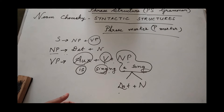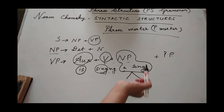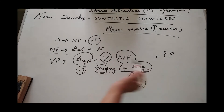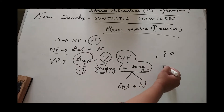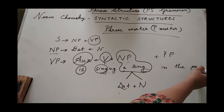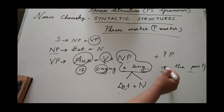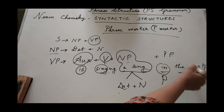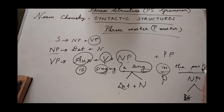Sometimes if the sentence is longer, you can add a PP — that is a prepositional phrase. For example, 'is singing a song in the party.' Here, 'in the party' is a prepositional phrase. 'In' is a preposition, and 'the party' is another noun phrase. If you further divide 'the party,' you get determiner plus noun: 'the' is a determiner and 'party' is a noun.